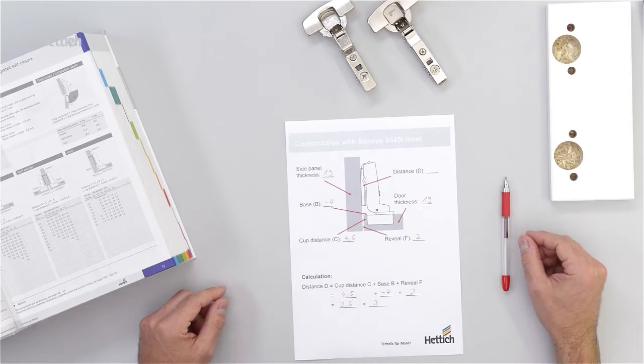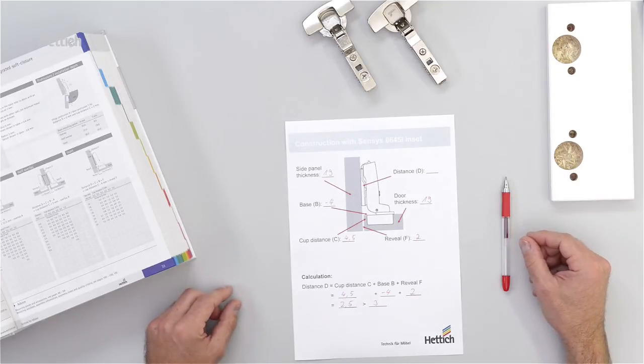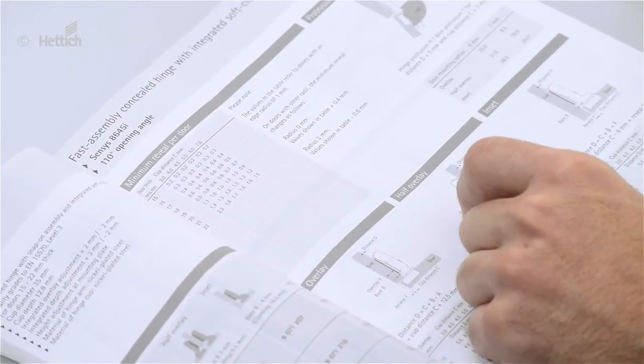In the last step we have to cross-check the minimum reveal. Therefore we go back to the catalog. There is a little table that shows the minimum reveals.